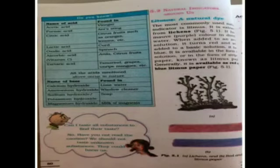Some names of bases are also given. Calcium hydroxide, found in lime water. Ammonium hydroxide, found in window cleaner. Sodium hydroxide or potassium hydroxide, found in soap. Magnesium hydroxide, found in milk of magnesia.